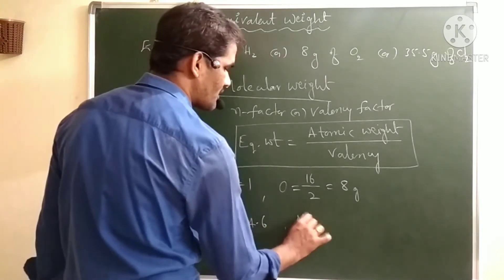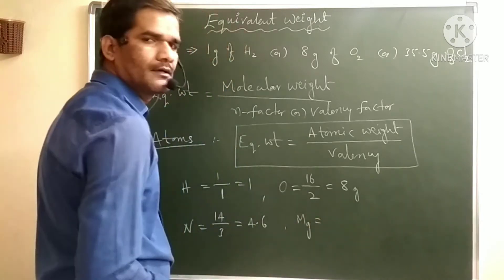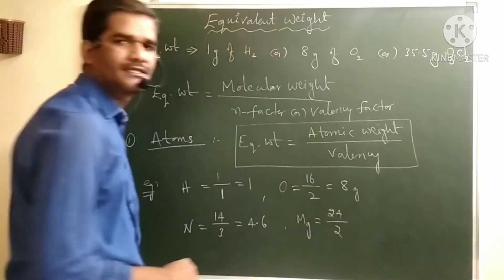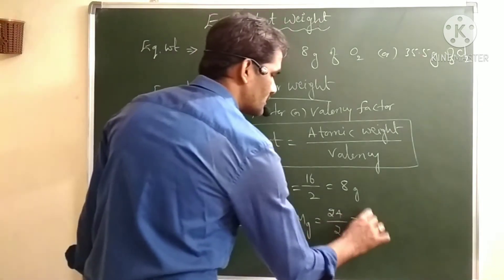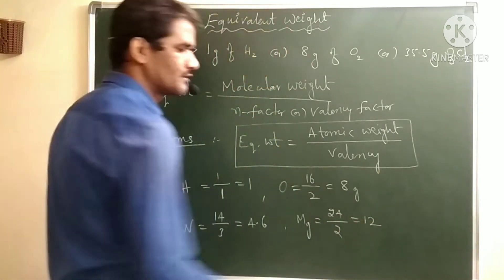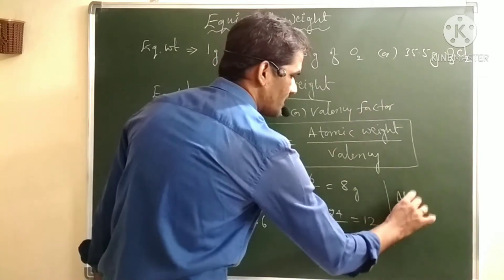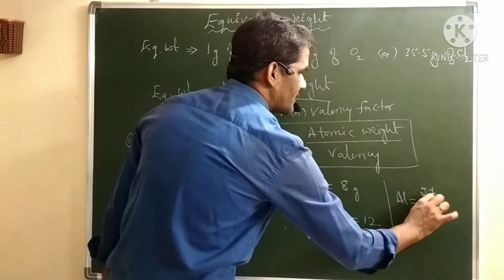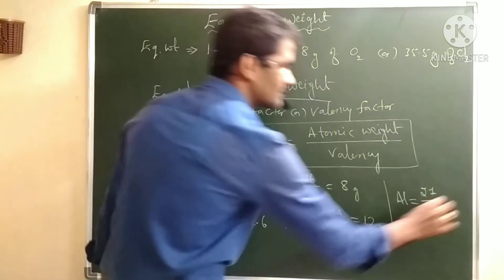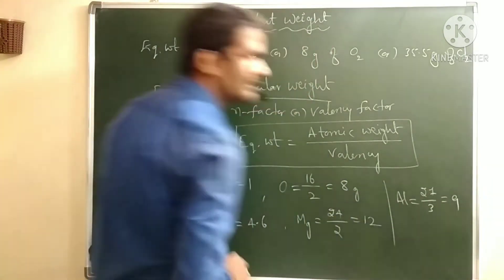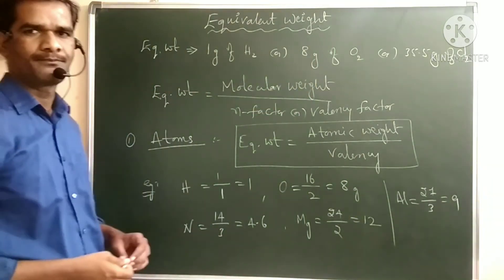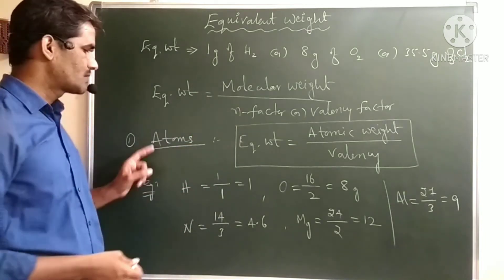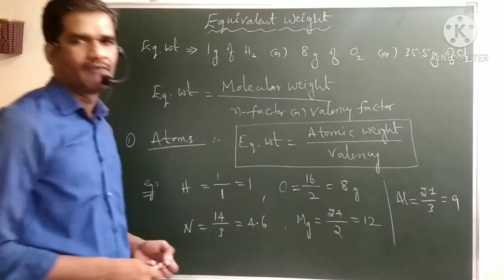Similarly, for magnesium, the atomic weight is 24 and valency is 2, so equivalent weight is 12. For aluminium, atomic weight is 27 and valency is 3, so equivalent weight is 9. We simply take atomic weight divided by valency to calculate the atom's equivalent weight.